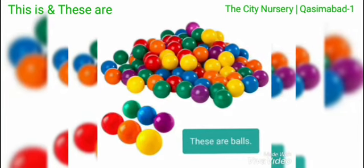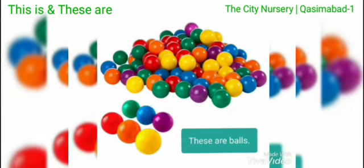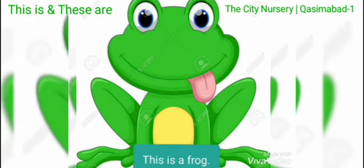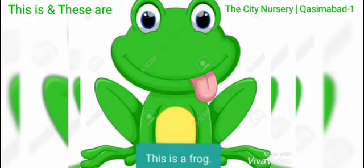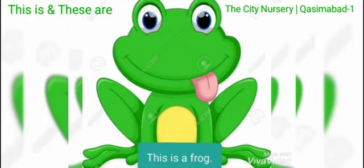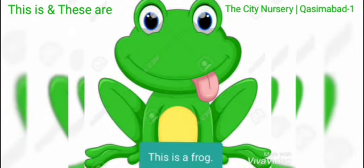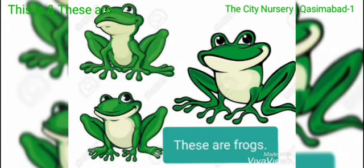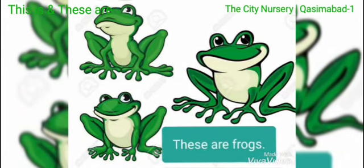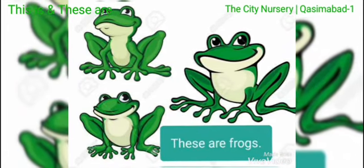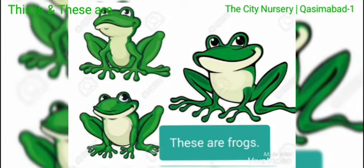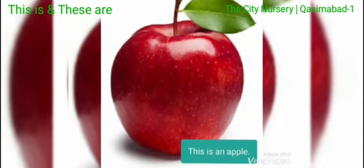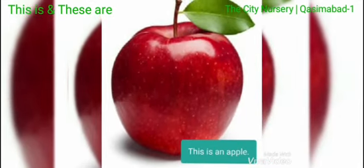We will use 'these are balls'. As here is only one frog, we will say 'this is a frog'. And we can see that there are three frogs, so we will say 'these are frogs'. This is an apple.